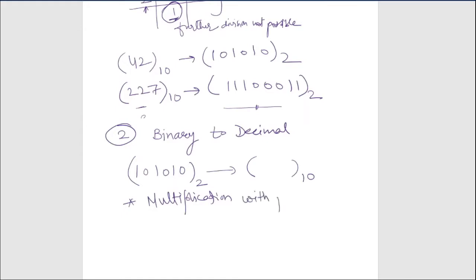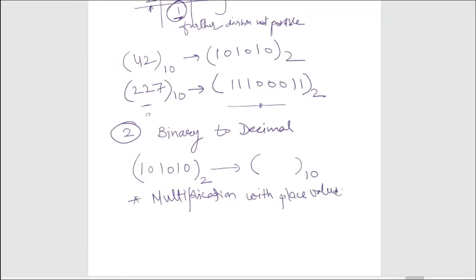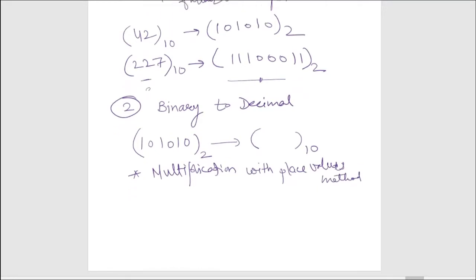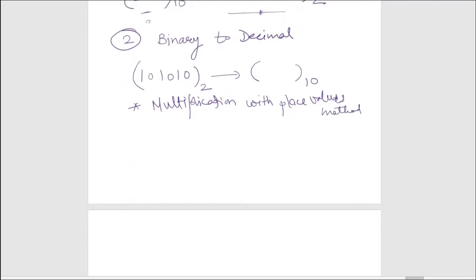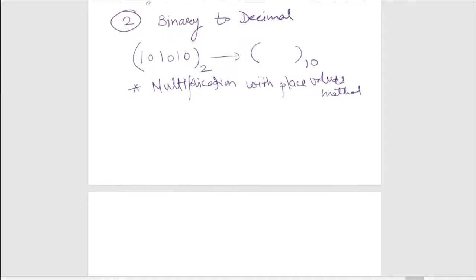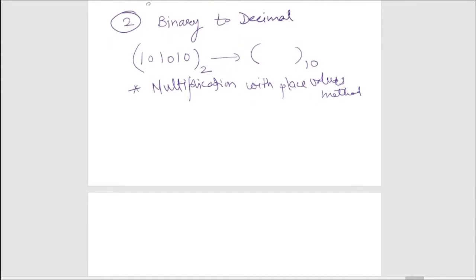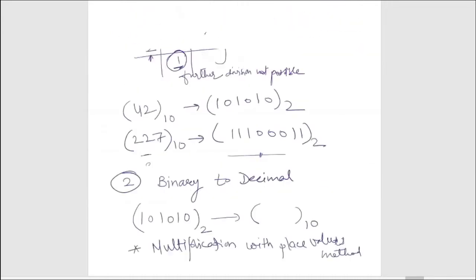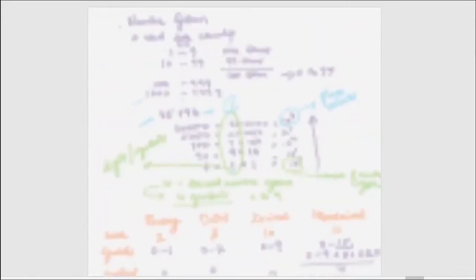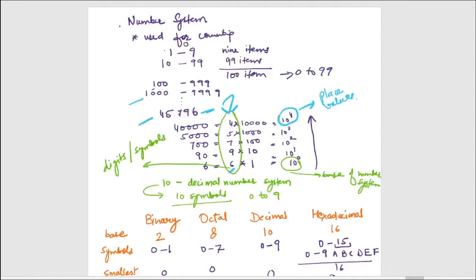The name of the method we will use is multiplication with place values. As we know, every number has a place value — we covered this initially as well.